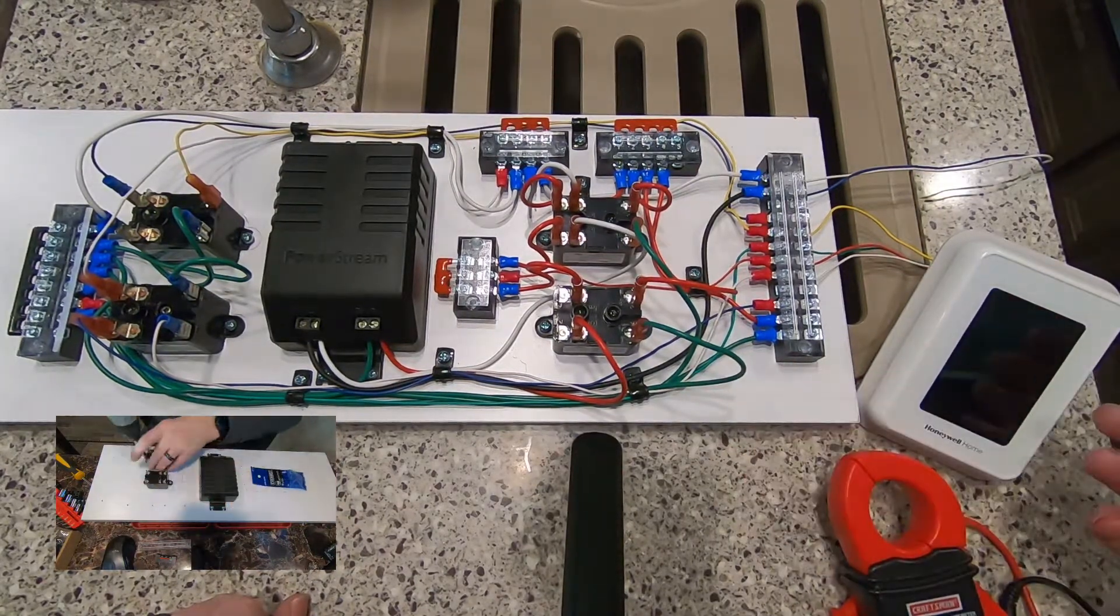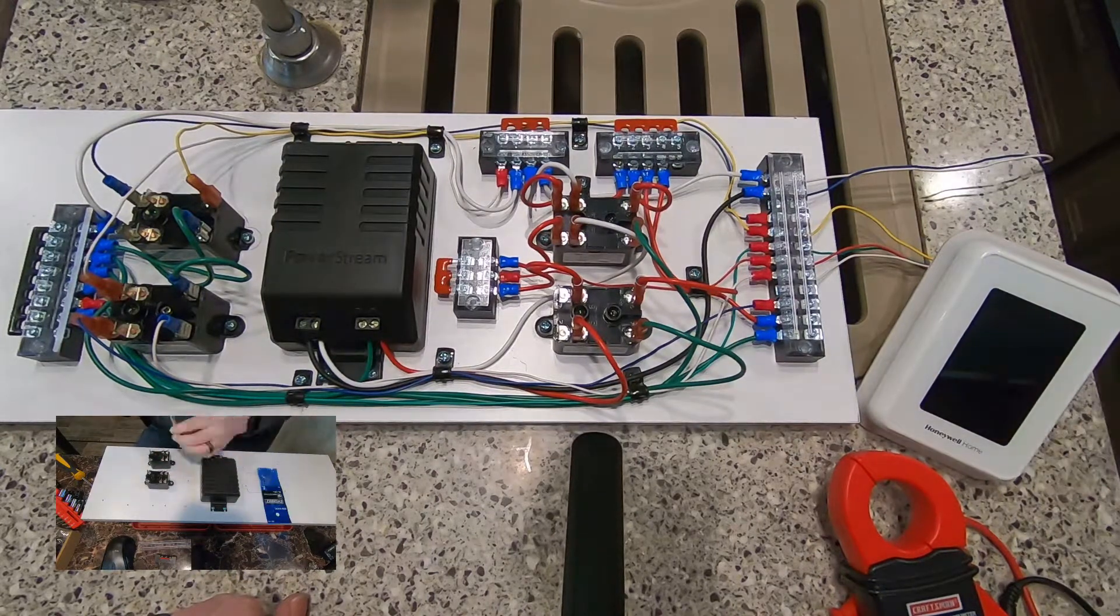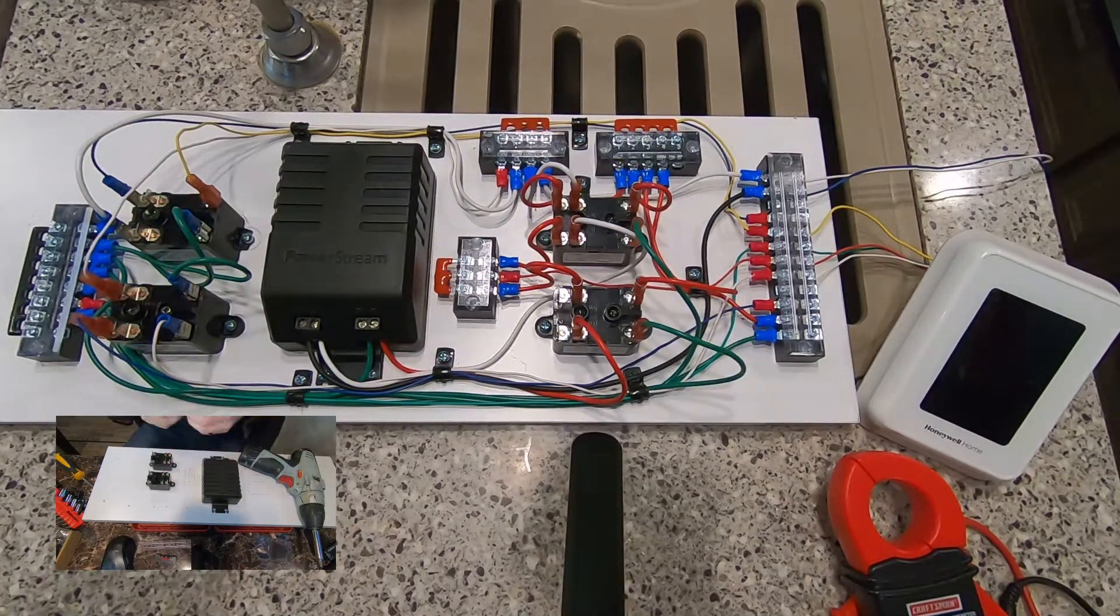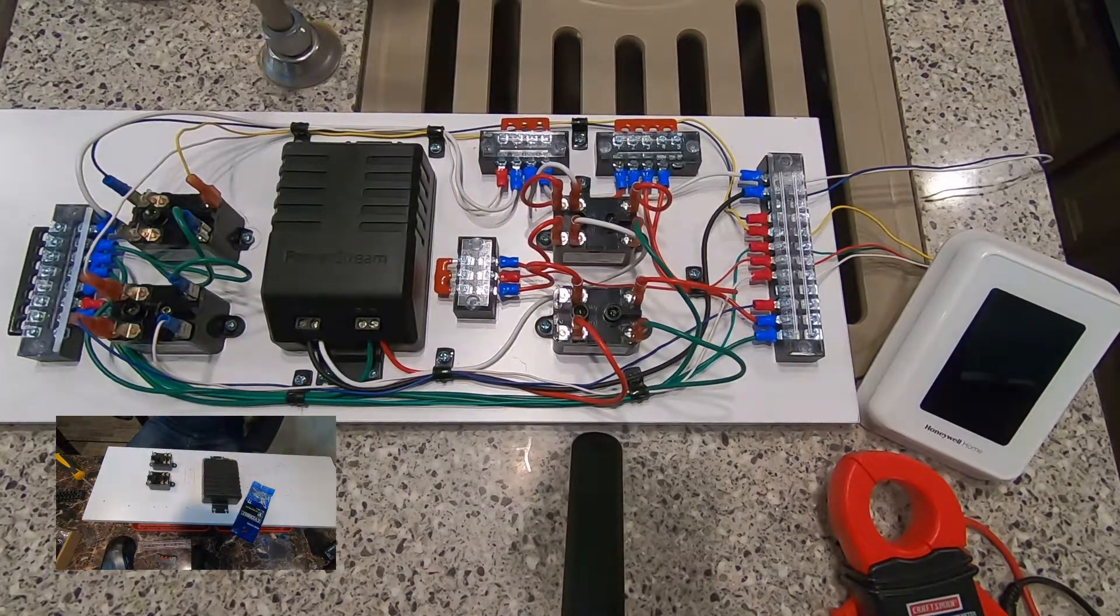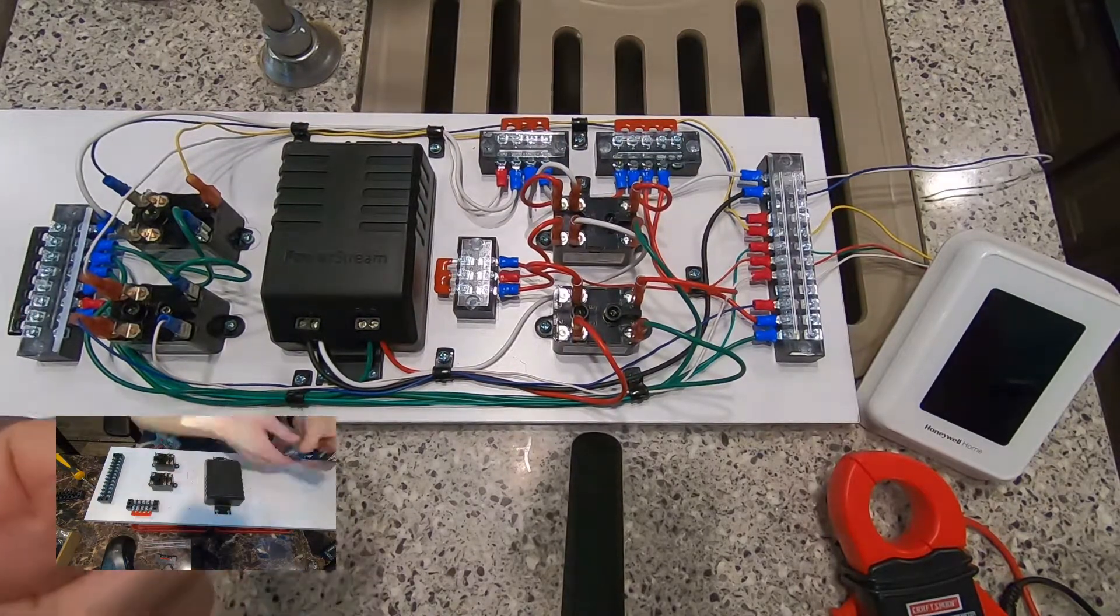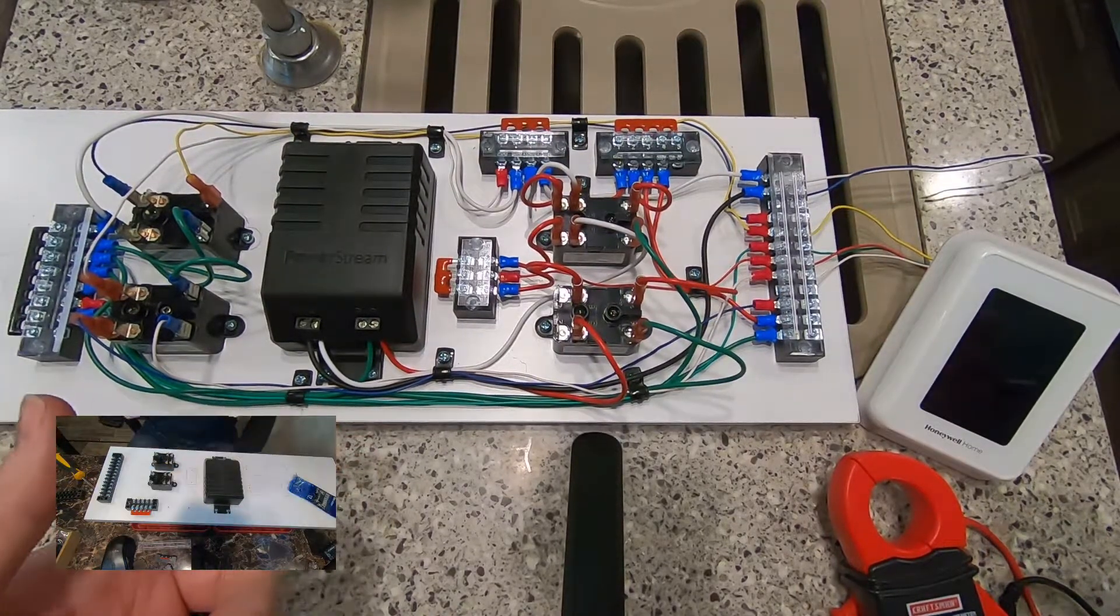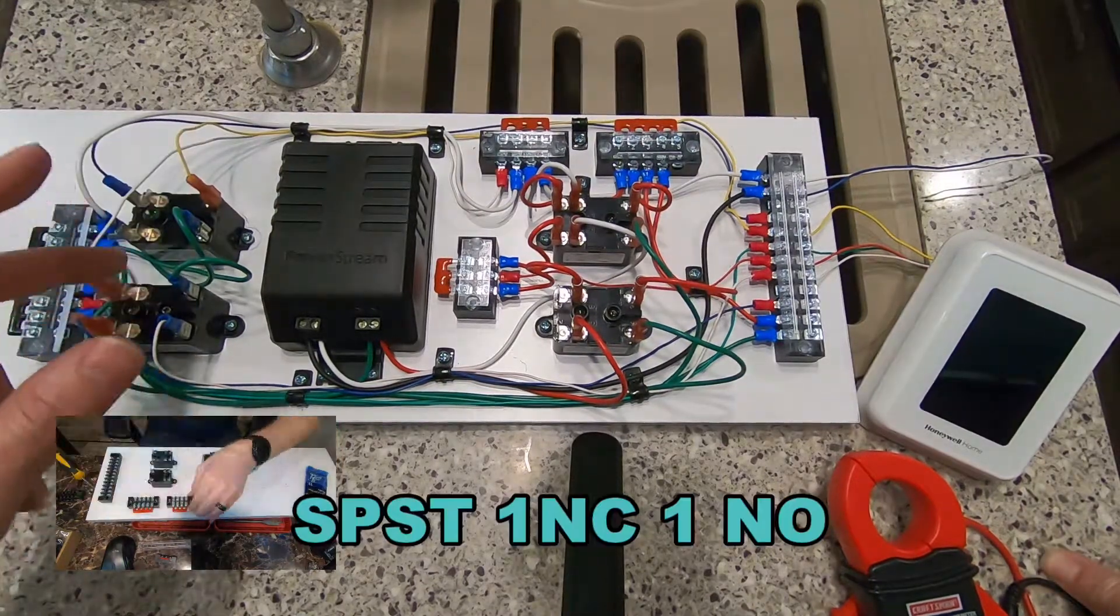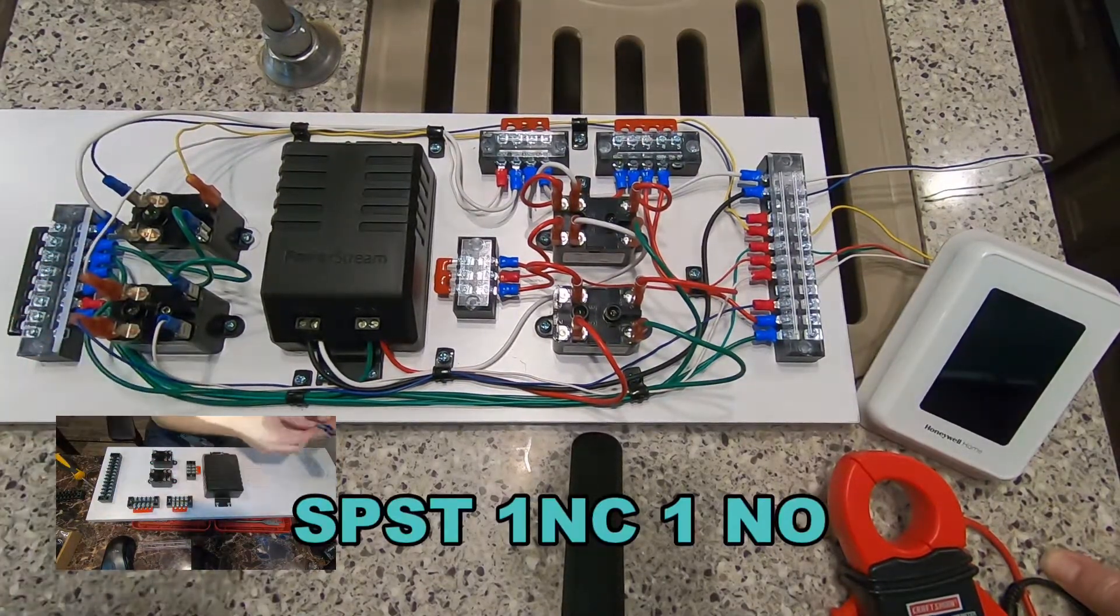Now because this thermostat is going to take that 24 volts and just pass it on to the heating or cooling whatever needs it, I needed to find a way to make it so that the circuit would still provide 12 volts to the furnace or to the air conditioner. So that's what these two are for, these are single pole single throw with a single normally open single normally closed.